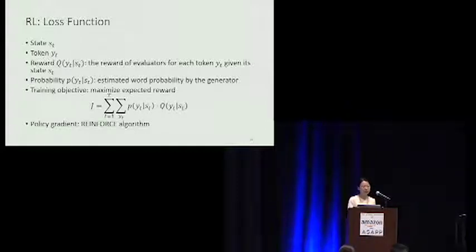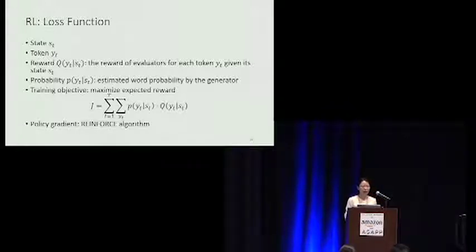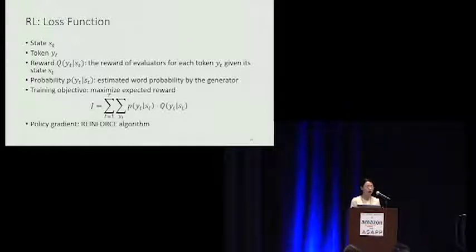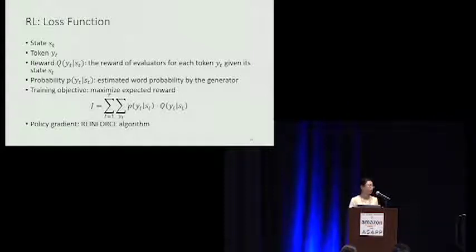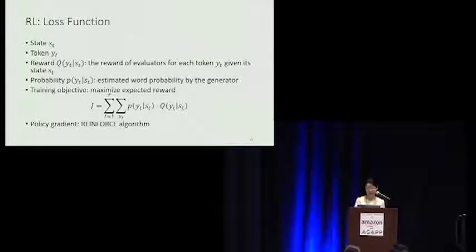Now we have the rewards. The training objective uses the state ST, current token YT, and reward Q(YT) from the evaluators, with the generator giving a probability distribution P(YT) over the vocabulary. The training objective is the expected reward over all tokens — essentially the probability of a token multiplied by its reward — and our goal is to maximize the expected reward. This can be understood as increasing the probability of tokens that receive higher rewards. We update the generator with policy gradient, specifically using the REINFORCE algorithm to optimize the generator's parameters.